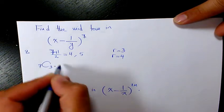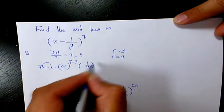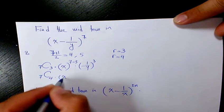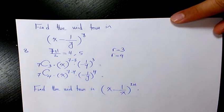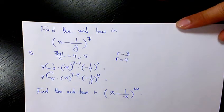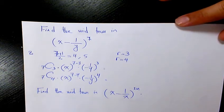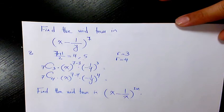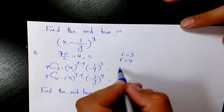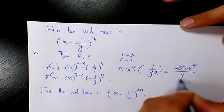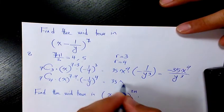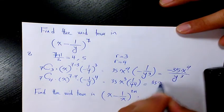So we have 7C3 · x^(7−3) · (−1/y)^3 and 7C4 · x^(7−4) · (−1/y)^4. From Pascal's triangle, 7C3 = 7C4 = 35. So the 4th term is 35 · x⁴ · (−1/y³) = −35x⁴/y³, and the 5th term is 35 · x³ · (1/y⁴) = 35x³/y⁴. These are the two middle terms.